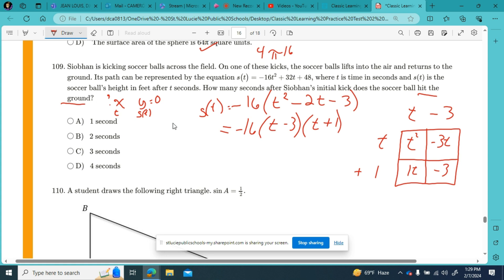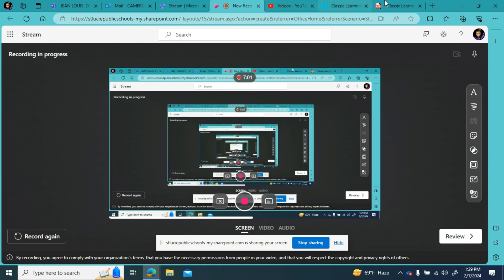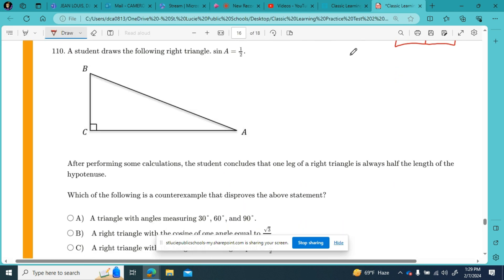So I would plug in here a positive 3. t equals positive 3, and our height is at zero. Or I could have t is equal to negative 1. But like we said, we can't have negative time. Negative 1 second does not make sense for this word problem. So C is for sure our answer for question number 109.